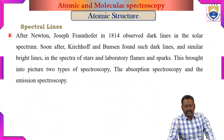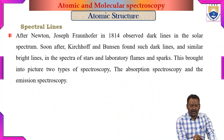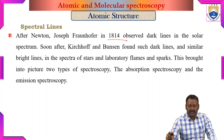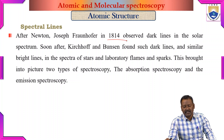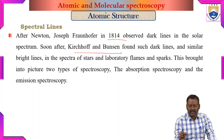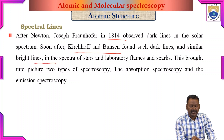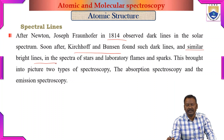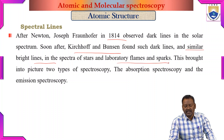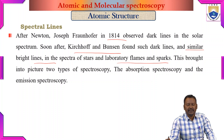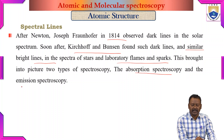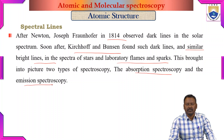For the first time in 1814, dark lines in the solar spectrum were observed. Soon after, Kirchhoff and Bunsen found such dark lines and similar bright lines in the spectra of stars, laboratory flames, and sparks. This brought into picture two types of spectroscopy: absorption spectroscopy and emission spectroscopy.